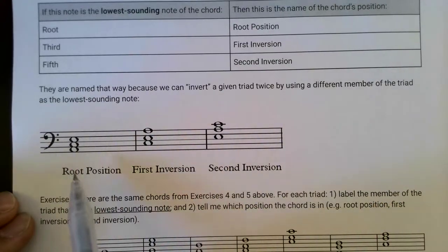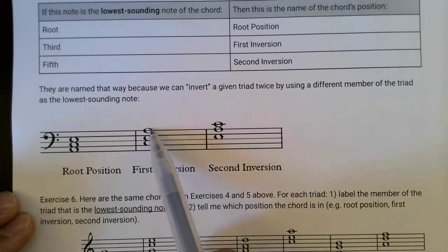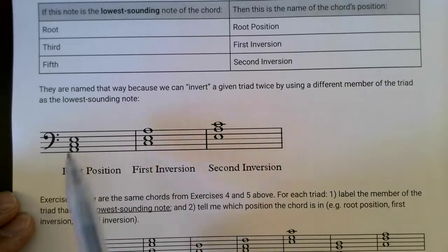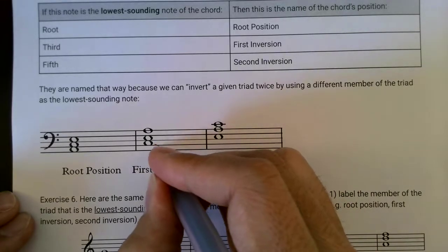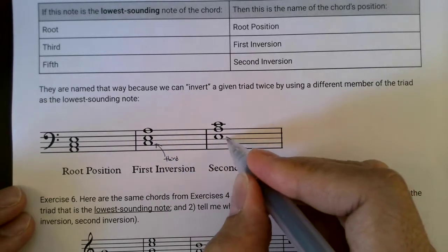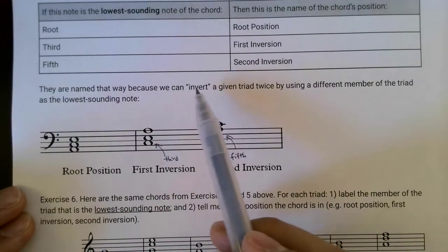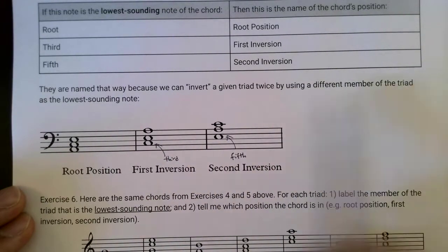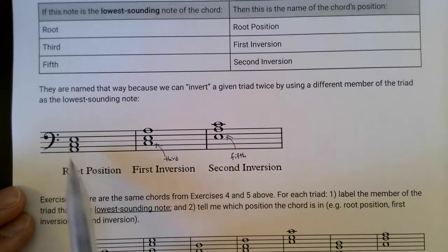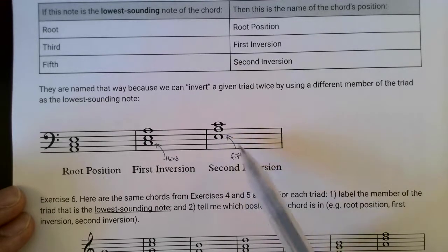You can see an example here. I have an A minor triad: A, C, E. In this position, this is root position because A is the root and is indeed the lowest sounding note. Here is another position of the same notes — A, C, and E — however, the C is the lowest sounding note. From root position, we know that C is the third. So here, the third of the chord is in the lowest position, meaning this is in first inversion. We can invert it again into a different position where the lowest sounding note is the fifth, and so we call it second inversion. They're named this way because we can invert a given triad twice by using a different member of the triad as the lowest sounding note: root in the bass is root position, third in the bass is first inversion, fifth in the bass is second inversion.